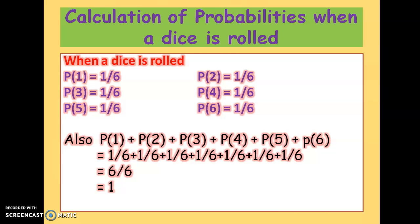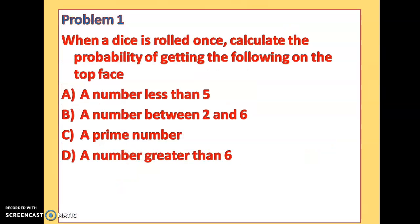Let us take a problem. When a die is rolled once, calculate the probability of getting the following on the top face. There are 4 parts: (a) getting a number less than 5, (b) getting a number between 2 and 6, (c) getting a prime number, and (d) getting a number greater than 6.